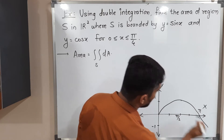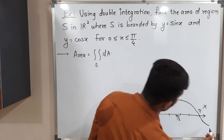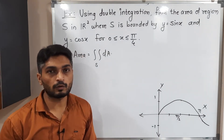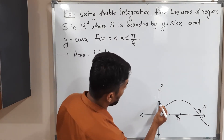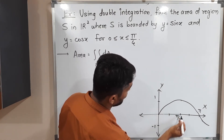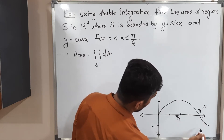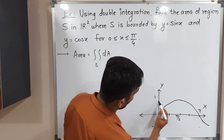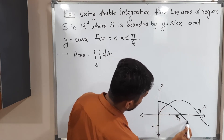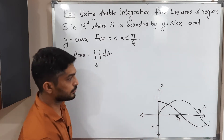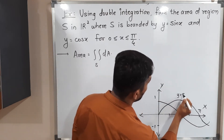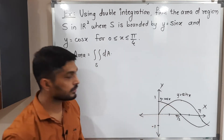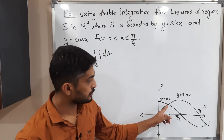I am drawing the sine curve up to that part only. The second curve is y = cos x. The value of cos at 0 is 1, at π/2 it is 0, and at π it is −1. So the cosine curve is drawn accordingly. This is our sine curve y = sin x and this is our cosine curve y = cos x. Both curves intersect each other at one point.